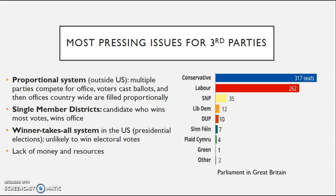This is part of the winner-takes-all system, and it hurts third parties especially in presidential elections, where even if you get 49% of the vote in California and 51% goes to the Democrat, those Republican votes are not going to be represented in the Electoral College. Another important issue is the lack of money — people do not necessarily have faith in third-party candidates, so with a lack of money comes a lack of resources as well.